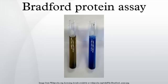The binding of the protein stabilizes the blue form of the Coomassie dye. Thus the amount of the complex present in solution is a measure for the protein concentration, and can be estimated by use of an absorbance reading. The blue form of the dye has an absorption spectrum maximum at 595 nanometers. The cationic forms are green or red. The increase of absorbance at 595 nm is proportional to the amount of bound dye, and thus to the amount of protein present in the sample.